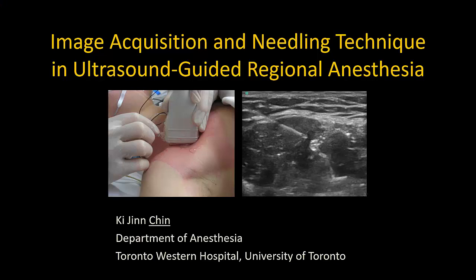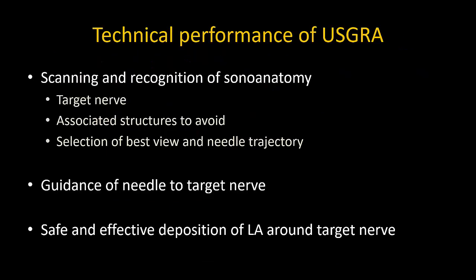This is the third part of a tutorial on image acquisition and needling technique in ultrasound-guided regional anesthesia. In the first part we covered the scanning phase and how to obtain an optimal image and plan the needle approach. In the second part we talked about probe and needle manipulation to localize the needle tip and guide it safely to the target nerve using both in-plane and out-of-plane approaches. The third and final phase is the injection and delivery of local anesthetic around the target nerve.